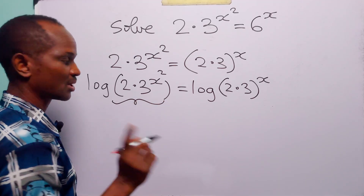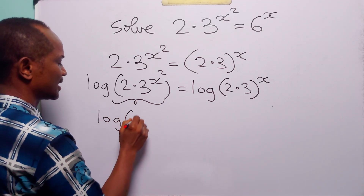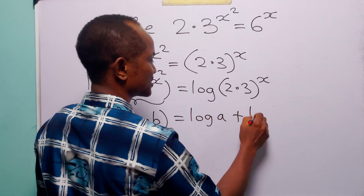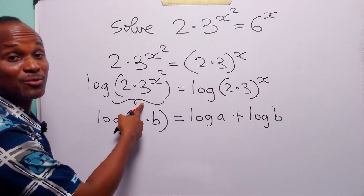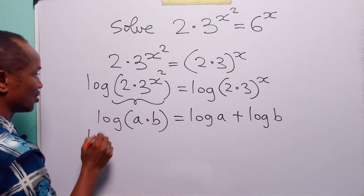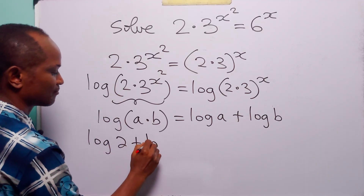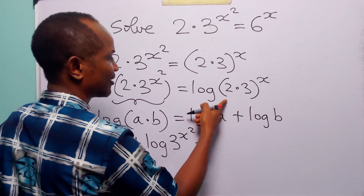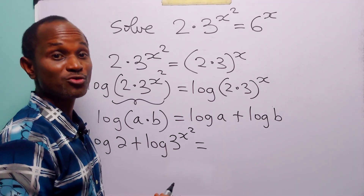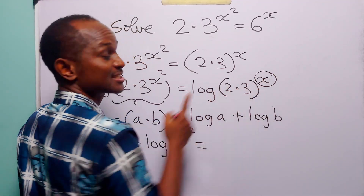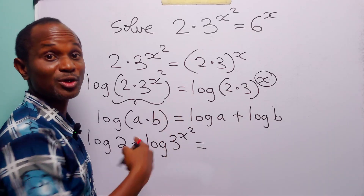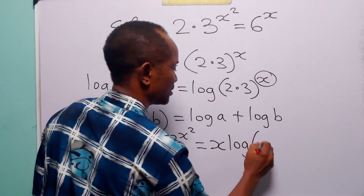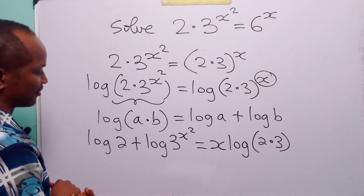This is a product. Remember that log a times b is equal to log a plus log b. So we can write the left-hand side as log 2 plus log 3 to the power x squared. On the right-hand side, we will apply the power rule — we are going to bring down the exponent x to the front of the log term to become a multiplier, giving us x times log 2 times 3.